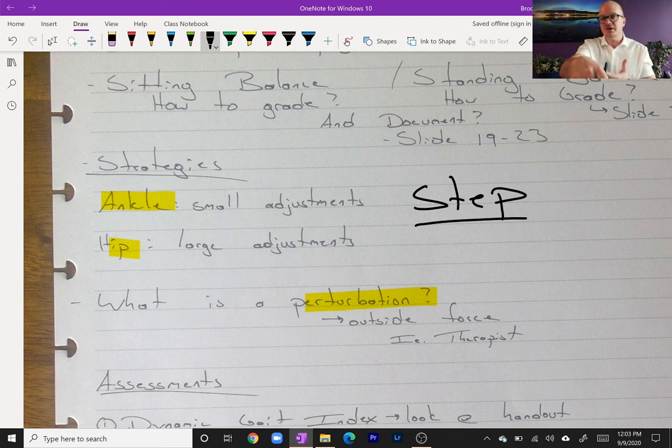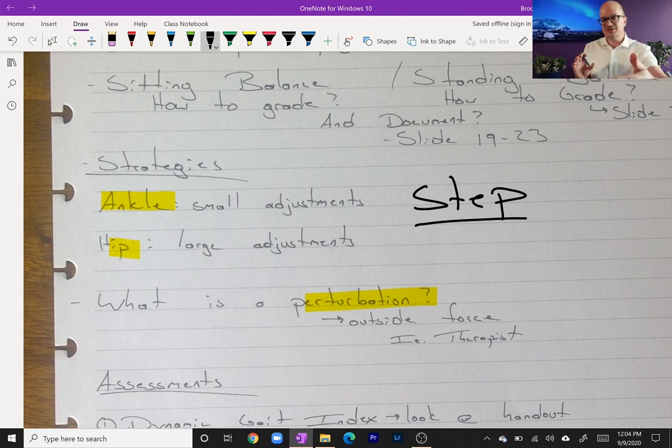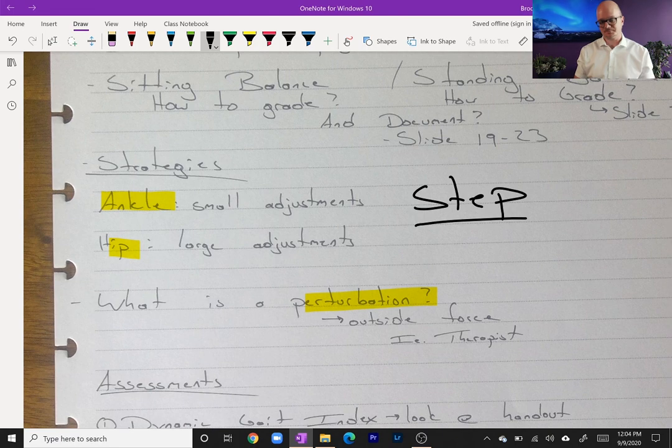If you push me hard enough and I start to fall forward, what's going to happen to keep me from falling? I'm either going to fall face first, or I'm going to take a step and save myself. I have moved my base of support anterior, thus maintained my center of mass in my base of support, thus I'm not falling.